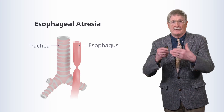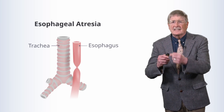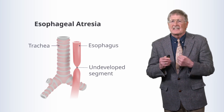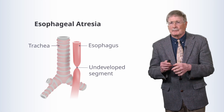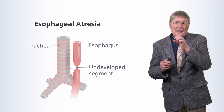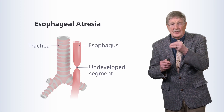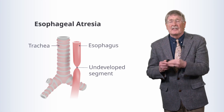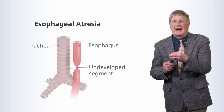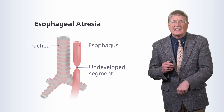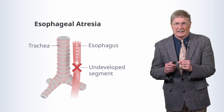Esophageal atresia, formally, is just where we've lost a segment of the esophagus. It doesn't completely develop, so we end up with a functional gap. The two ends of the esophagus may be connected by a fibrous strand, but nothing can get through it. That's esophageal atresia.